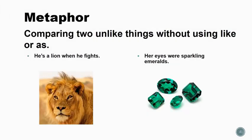A metaphor is very similar to a simile. With a metaphor, you're comparing two unlike things without using like or as — you're saying that one thing is something else. For example, he's a lion when he fights, or her eyes were sparkling emeralds. Notice in these statements, they're not saying it's like the other thing; they're just saying it is it.